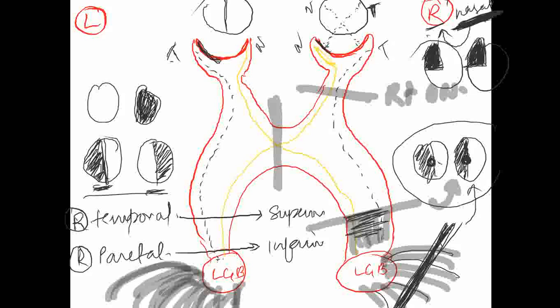The second question: bitemporal hemianopia — lesion is at the optic chiasma. The third question: right temporal lower quadrant visual field loss and left nasal lower quadrant visual field loss. Left nasal tells us it's the left side. Lower quadrant means inferior, which means parietal lobe, not temporal. Temporal is superior. So the answer is left parietal.